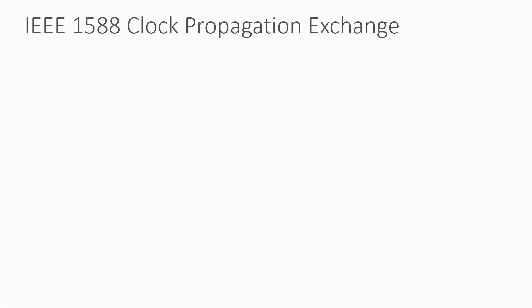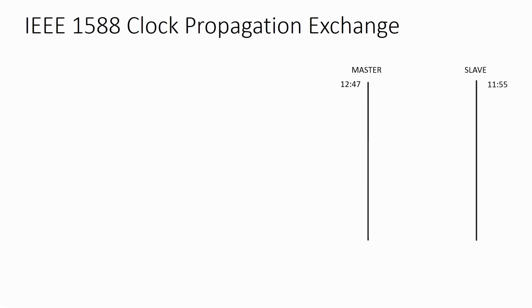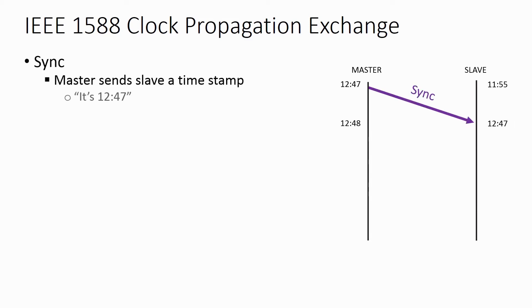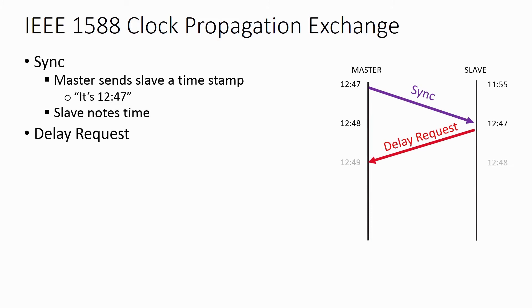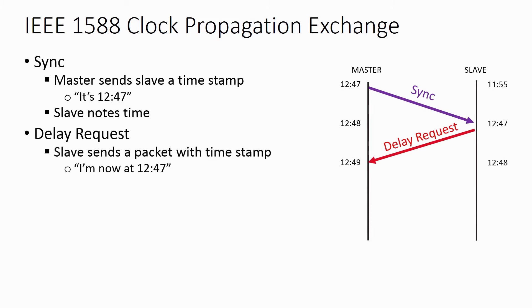Here's the process in a nutshell. The grandmaster tells the network its current time with a packet called a sync packet — for example, it's currently 1247. A foreign device receives this packet, but what needs to be considered is the time taken for the packet to traverse the network itself. To figure out this time delay, the endpoint device sends a delay request packet to the grandmaster that includes a new timestamp — for example, it believes it to be 1247.